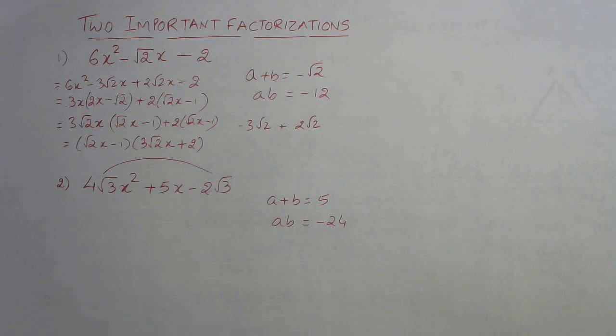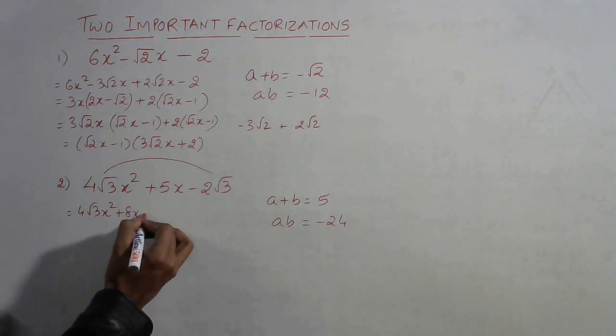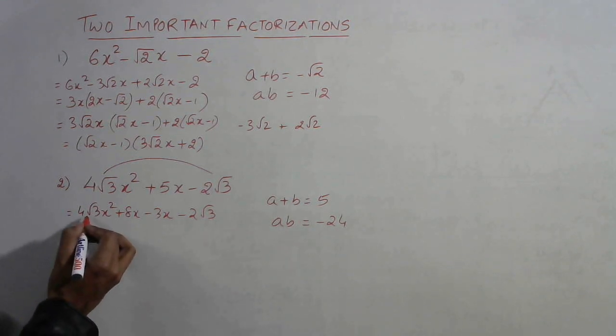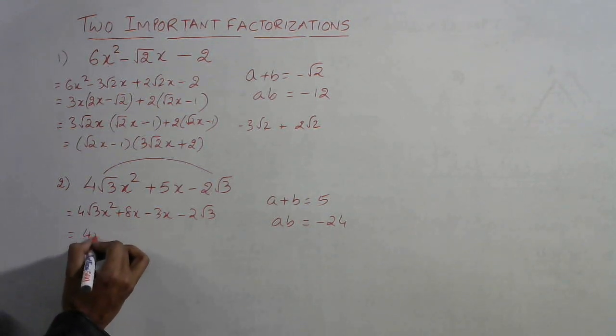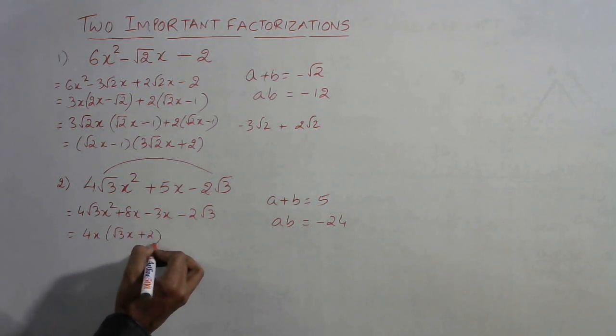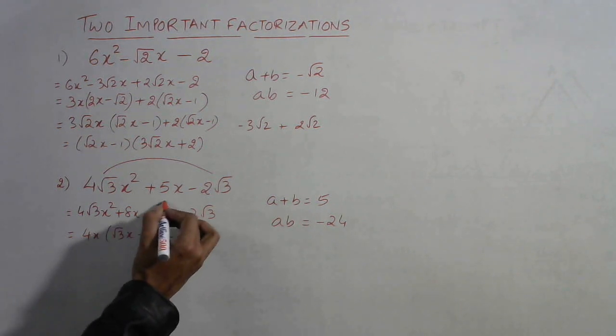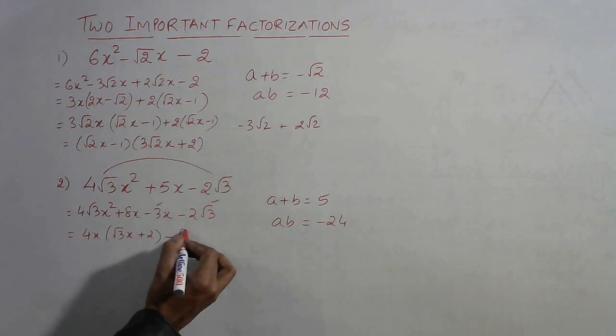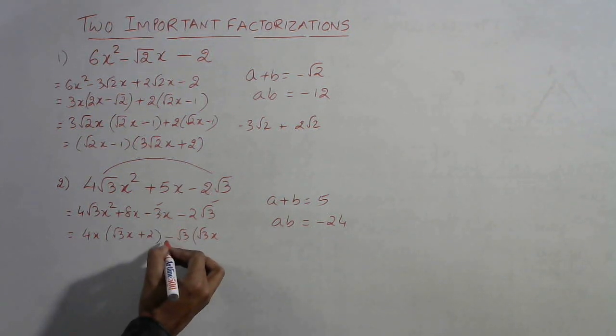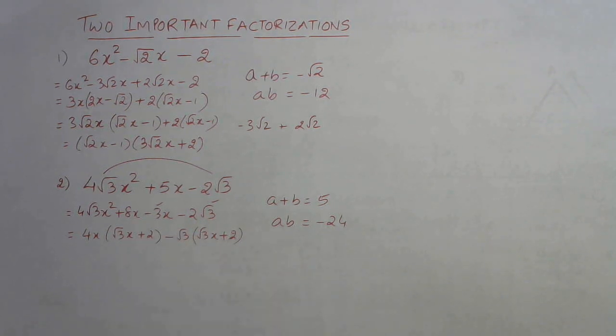4 root 3 x square plus 8 minus 3. Now let us see how to take common. Now clearly in these two terms 4x is common, so leaving behind root 3 x plus 2. And in these two terms negative is there and among 3 and root 3 you can take a root 3 common. So we will have 1 root 3 left here along with x and negative is already taken out, so this will be positive and root 3 is taken out, so this 2 will be there.